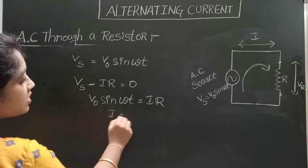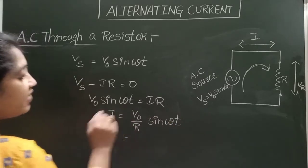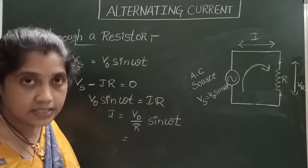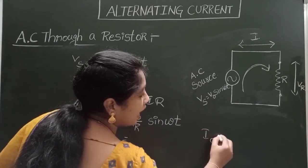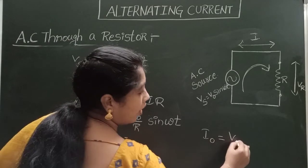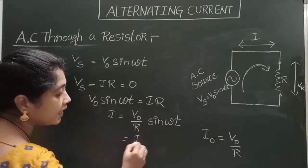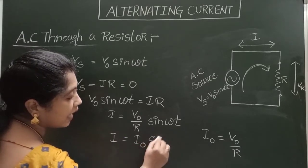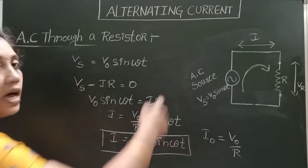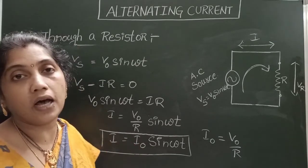From this, I = (V₀/R) sin(ωt). Here V₀ is the peak voltage and R is the resistance, so the peak current I₀ = V₀/R. Substituting, I = I₀ sin(ωt). This is the alternating current in the circuit, where I₀ is the peak value or maximum current.